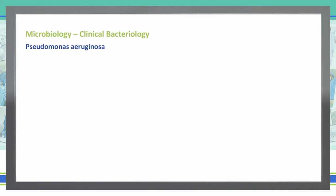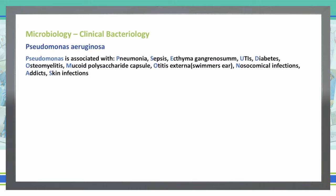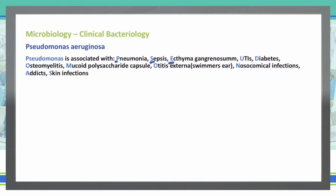What type of symptoms do we have with Pseudomonas? Pseudomonas itself can be a mnemonic to help you remember the different symptoms it causes: P — pneumonia, S — sepsis, E — ecthyma gangrenosum, U — UTIs, D — diabetes, O — osteomyelitis, M — mucoid polysaccharide capsule, O — otitis externa or swimmer's ear, N — nosocomial infections, A — addicts, and S — skin infections.